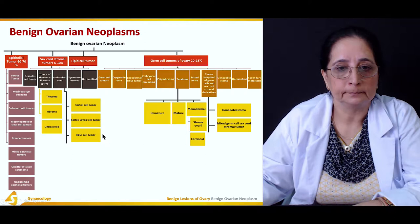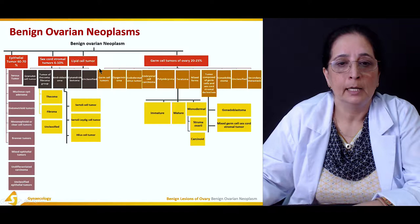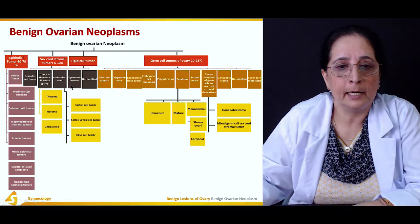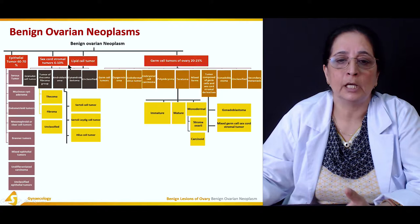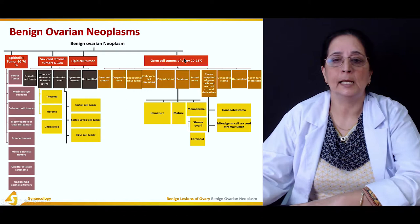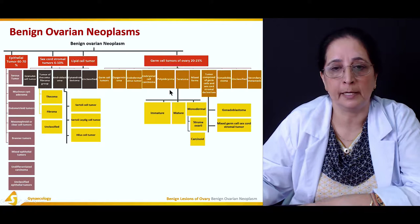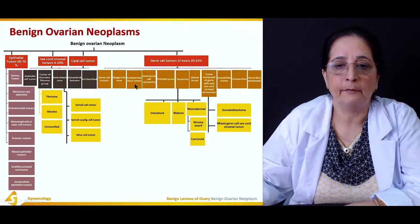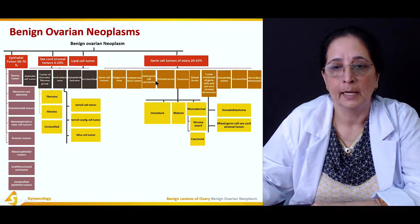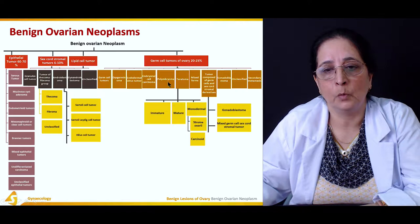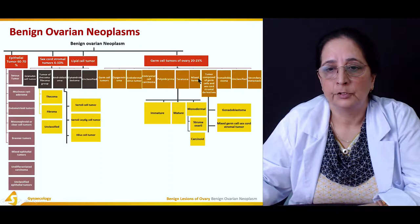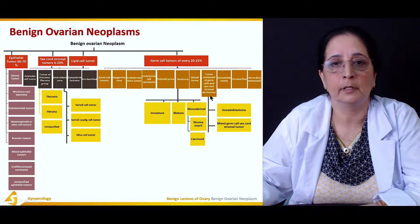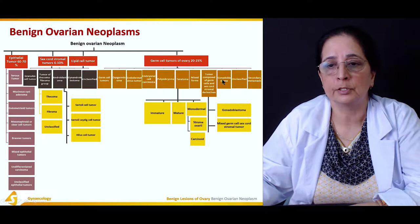Lipid cell tumors are grouped into gynandroblastoma and unclassified subtypes. Germ cell tumors of the ovary constitute about 20 to 25%. This group includes dysgerminoma, endodermal sinus tumor, embryonal cell carcinoma, polyembryoma, teratoma, mixed forms, tumors composed of germ cells and sex cord stromal derivatives, gonadoblastoma, unclassified, and secondary metastasis.